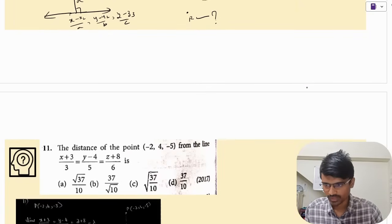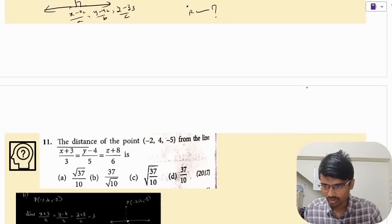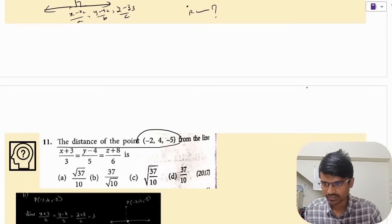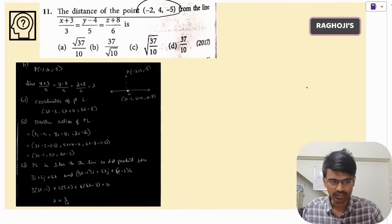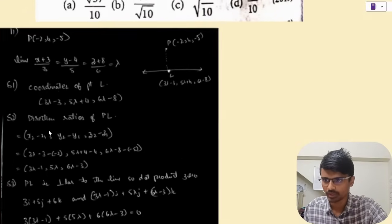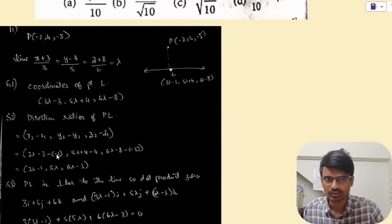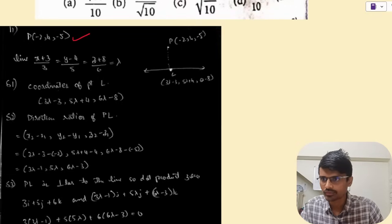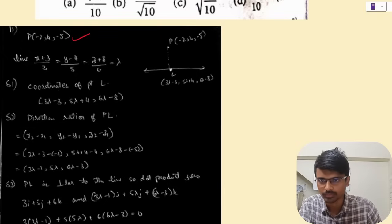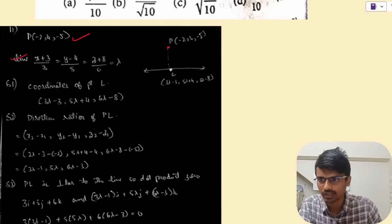The first question: find the distance of the point (−2, 4, −5) from the line (x+3)/3 = (y−4)/5 = (z+8)/6. The coordinates of point P are (−2, 4, −5). The equation of the line is (x+3)/3 = (y−4)/5 = (z+8)/6.